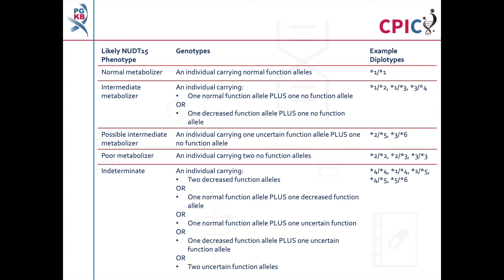Note that the functional status of some TPMT and NUDT15 haplotypes have not yet been characterized. These are listed as having an unknown effect on the function of TPMT or NUDT15 and should be interpreted with caution on a genetic test. An important caveat for all genotyping tests is that a normal function status is given to all alleles which are not detected in the assay. This can include rare reduced function or non-functional alleles which are not routinely screened for in some genotyping tests.